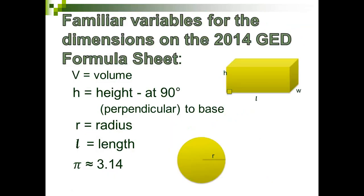Familiar variables for the dimensions on the 2014 GED formula sheet: B equals volume, H is height at 90 degrees to the base, R still signifies radius, L is length, and pi is approximately 3.14. There's a nice illustration showing radius as half the distance across a circle or sphere.